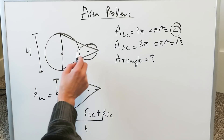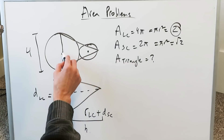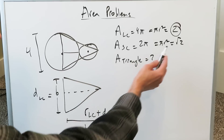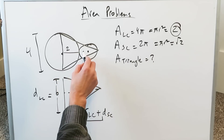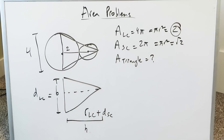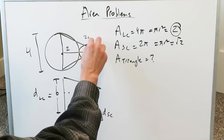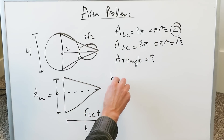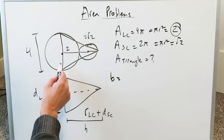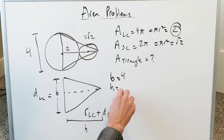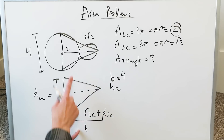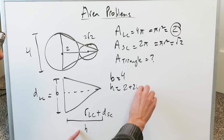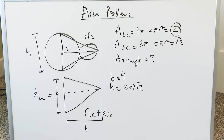Looking at the height components: I have the radius of the large circle, which is 2. Each of the radii of the small circle are √2, so the diameter of the small circle is 2√2. I have everything I need. The base is equal to 4, and the height is equal to 2 plus 2√2.